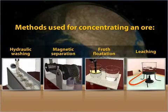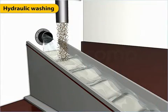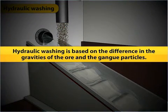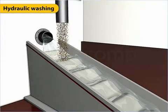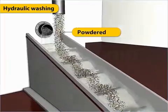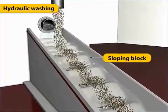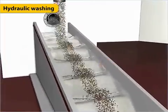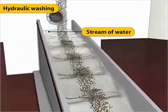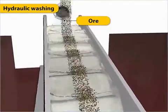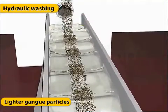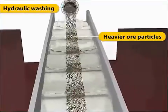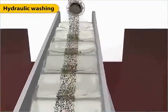Let's first learn in detail about the method of hydraulic washing, which is based on the difference in the gravities of the ore and the gangue particles. In hydraulic washing, powdered ore is spread on a sloping block having grooves. When a stream of water is allowed to flow over the ore, lighter gangue particles get washed away, leaving the heavier ore particles behind within the grooves.